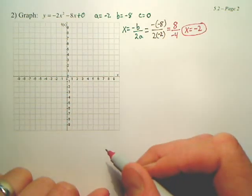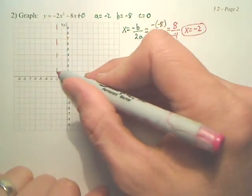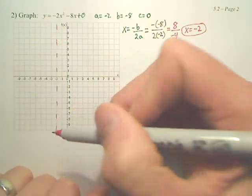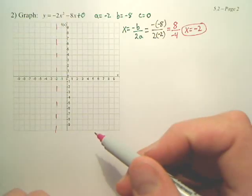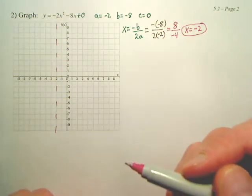The importance of that, it creates an imaginary line down the middle of your parabola called the axis of symmetry. Your parabola is going to revolve around that. It's going to be the hub of it.